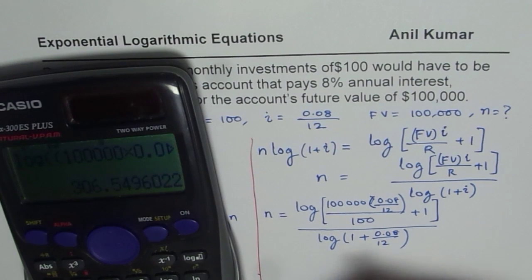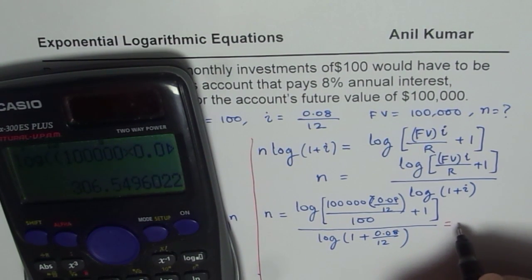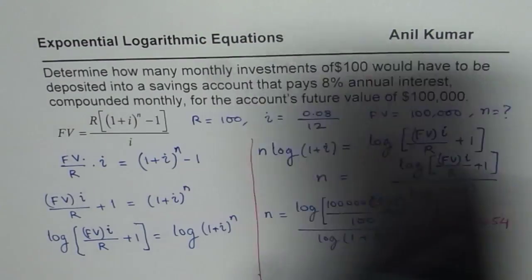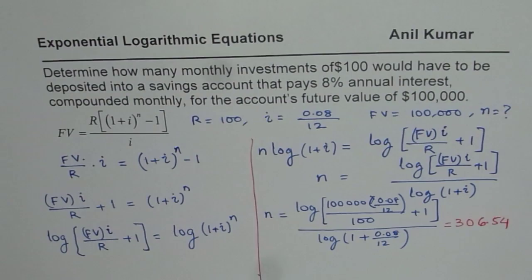Let's see what we get. So we get 306.54. This is what we get.